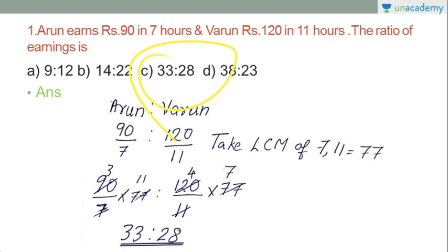If you have a ratio in one hour, we take it as a fraction. We take the LCM of the denominators and check the ratio. For simplification, if you have denominators, we take the LCM to find the individual values.